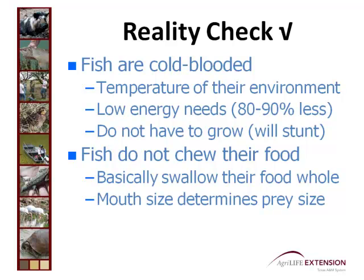I'd like to start with a reality check just on fish in general. Fish are cold-blooded creatures, and that means they do not keep their body temperature the way we do with calories from the foods we eat. They are the temperature of their environment. Most of our private ponds are sitting around 70 degrees right now. Every fish out there is 70 degrees — not one is 72, not one is 68. That temperature drives everything: their heart rate, their gill rate, their breathing rate, how much they will eat, how hungry they are, and when they want to reproduce.